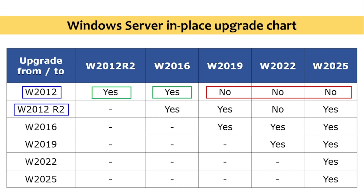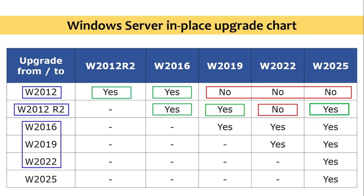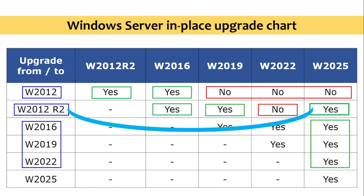For Windows Server 2012 R2, we can perform an in-place upgrade to 2016 and 2019, but it doesn't support an in-place upgrade to 2022. However, it does support an in-place upgrade to 2025. Windows Server 2016 and 2022 also definitely support in-place upgrade to 2025. So the big advantage here is we can perform an in-place upgrade directly from 2012 R2 to 2025.